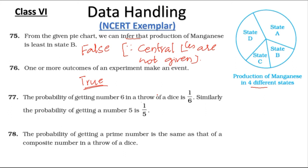Statement 77: The probability of getting 6 in a throw of a dice is 1 by 6. Similarly the probability of getting 5 is 1 by 5 — this second part is incorrect, because the probability of getting 5 is 1 out of 6 outcomes, which is 1 by 6. So the statement is false.